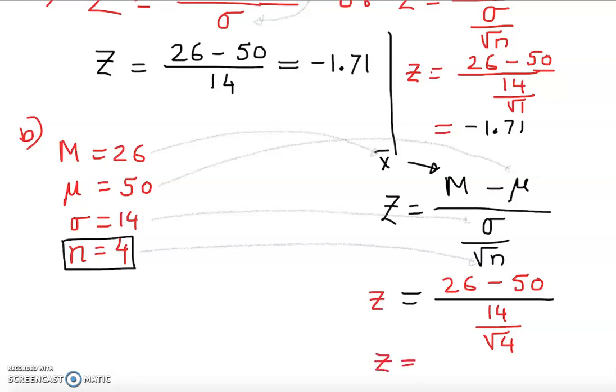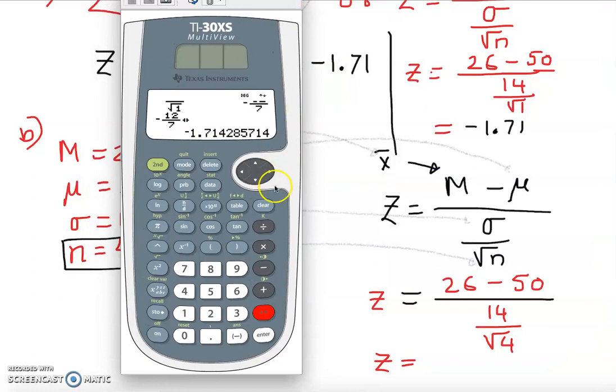This is sample mean, this is population mean, this is standard deviation. Everything is given. All you do, you just slide it in. So 26 minus 50 over 14 square root of 4. I would like to show you, type this in the calculator. Again, I would like to erase the calculator. We do n over d. 26 minus 50. The good thing is using this calculator, you don't have to worry about the parentheses. 14 over square root of 4.